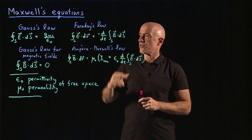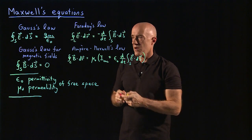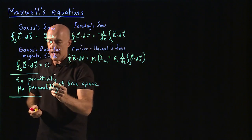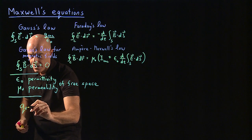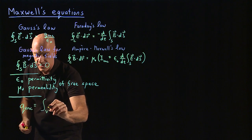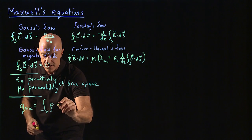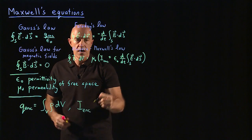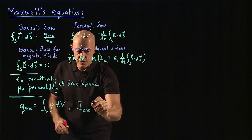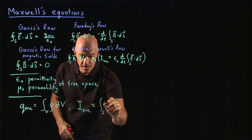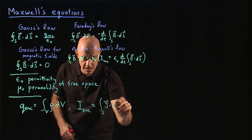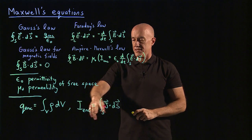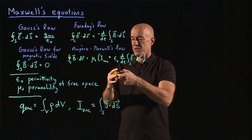So how do we convert the integral form of Maxwell's equations to differential form? We need to replace the charge and the current by the charge density and the current density. The charge enclosed is going to be equal to the integral over the volume of the charge density times dV. And the current enclosed by this loop is going to be equal to a surface integral of the current density dotted into dS, the surface element.